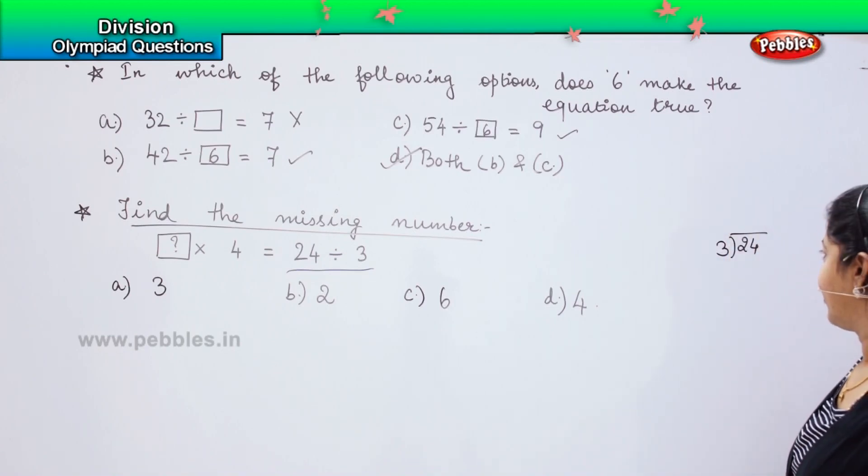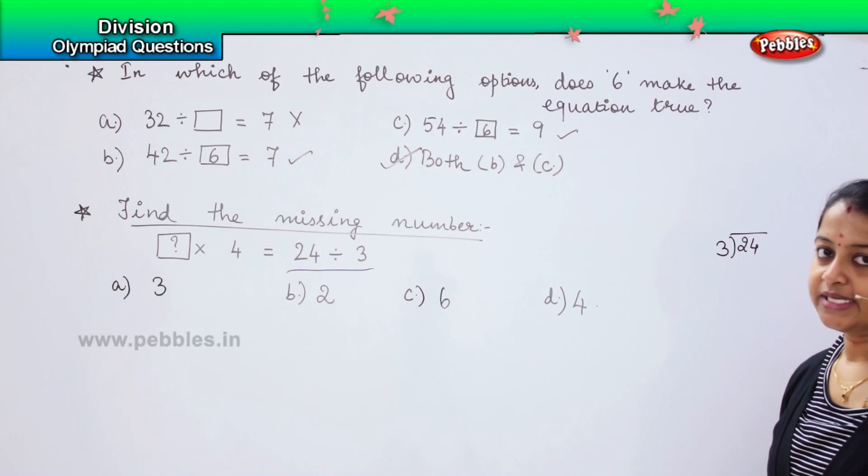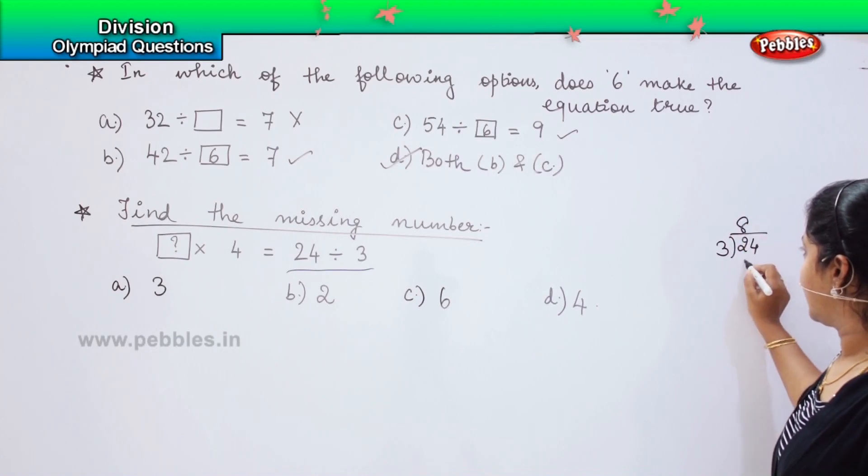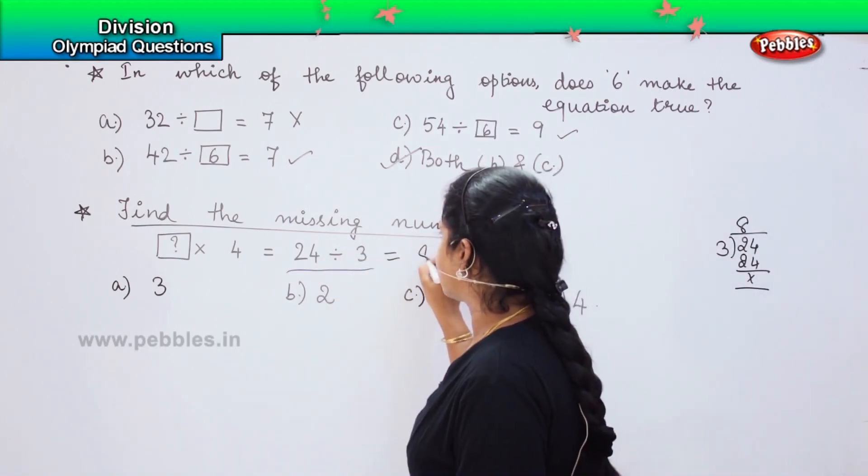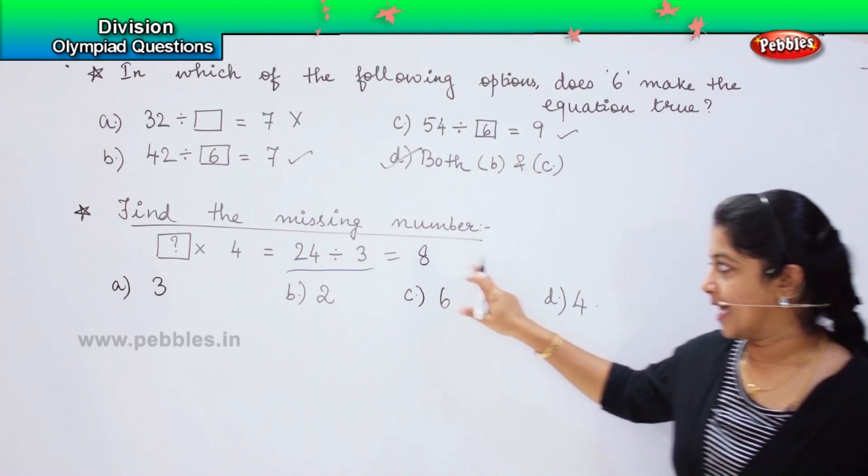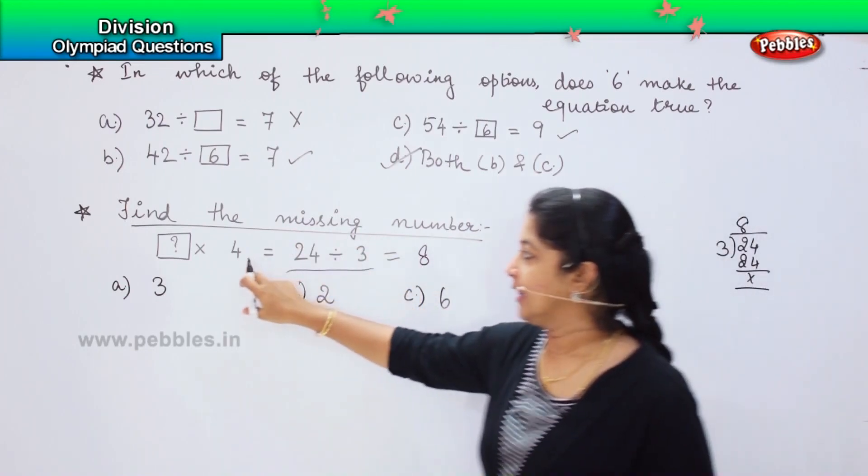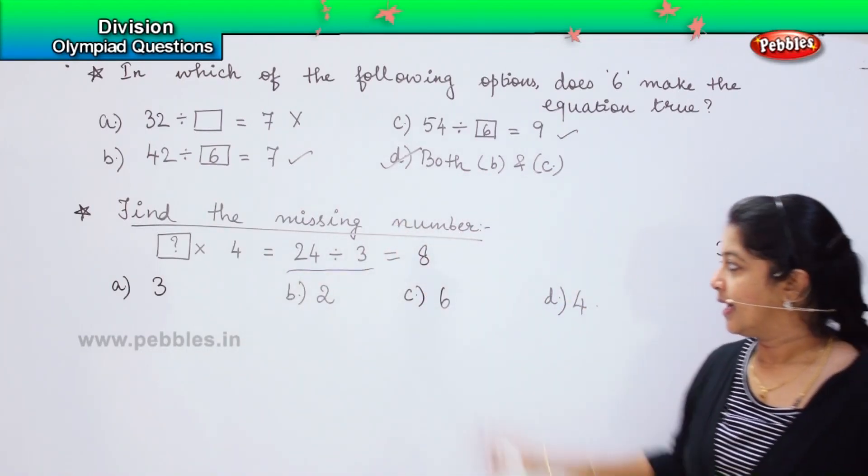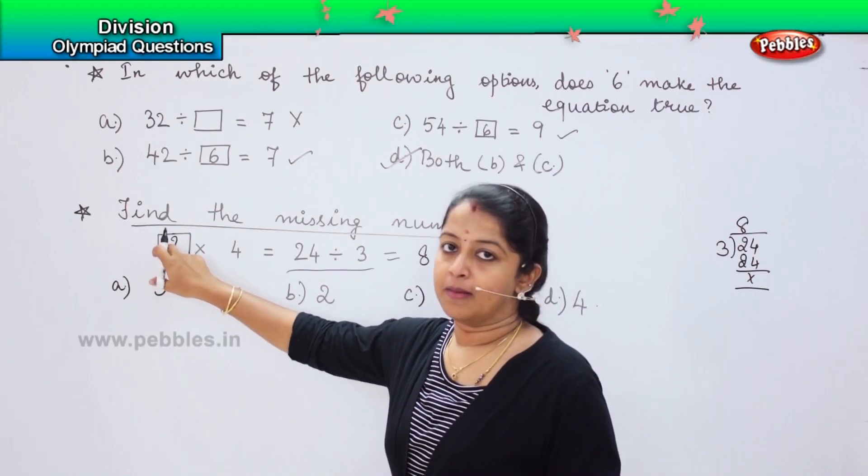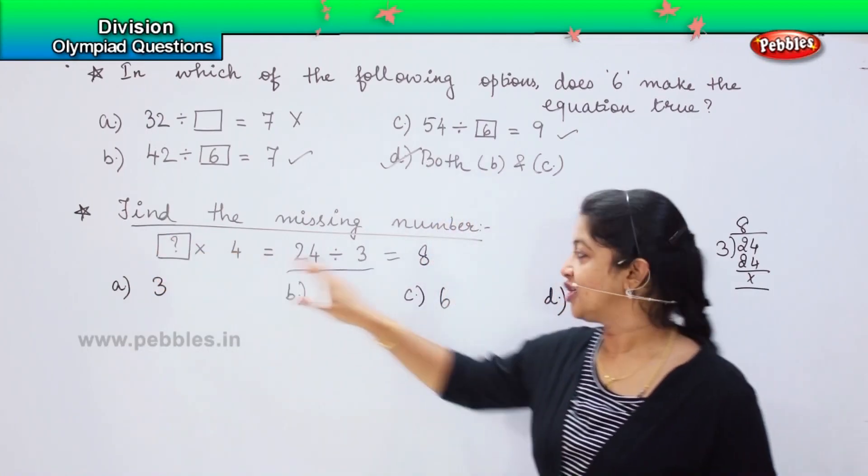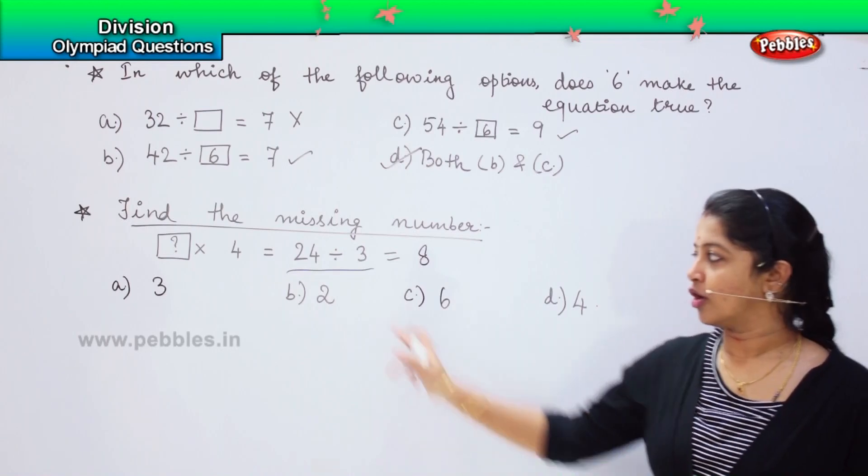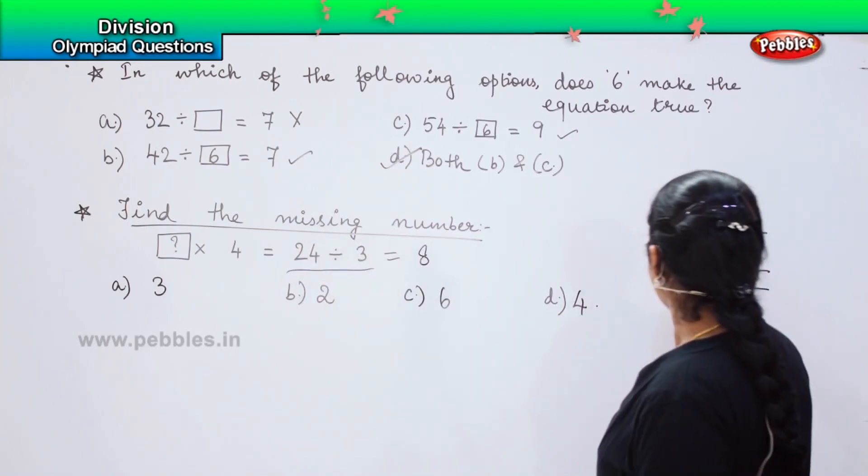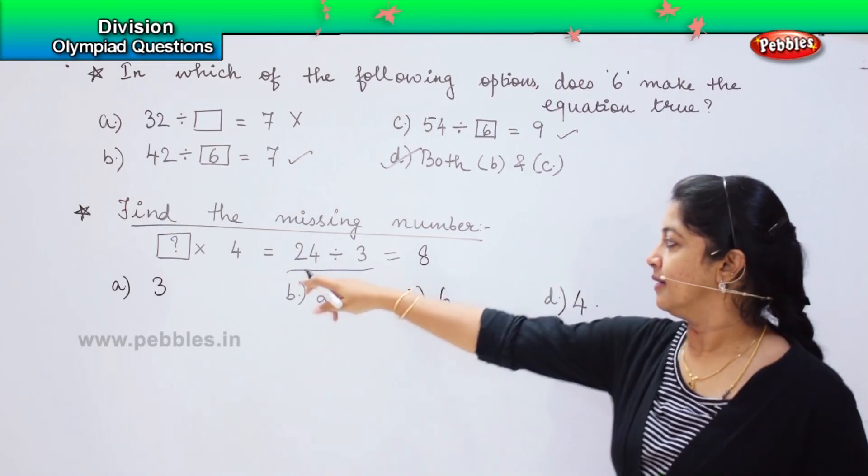Let us do 24 divided by 3. 3 5's are 15, 3 6's are 18, 3 7's are 21 and 3 8's are 24. If you divide 24 divided by 3, I get the answer 8. And the question says that the answer of this division and the product of this multiplication is the same, which is 8. Now, I do not know what will come here. But if I multiply this number with the 4, I should get the answer 8. What should I do in such a case? Yes, I need to divide in order to find the number. What will I do?